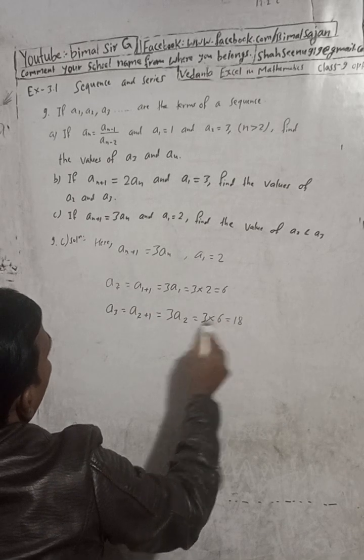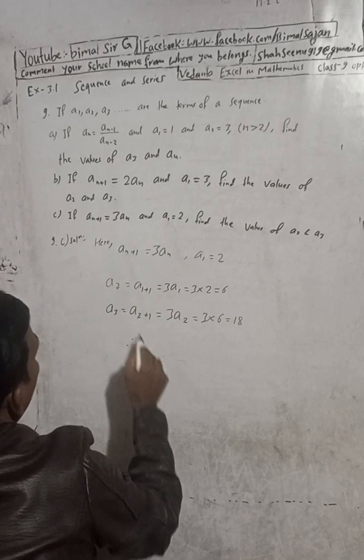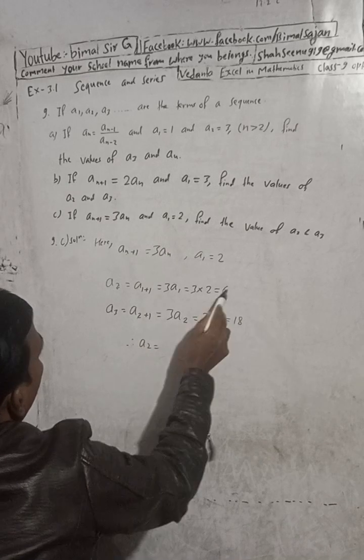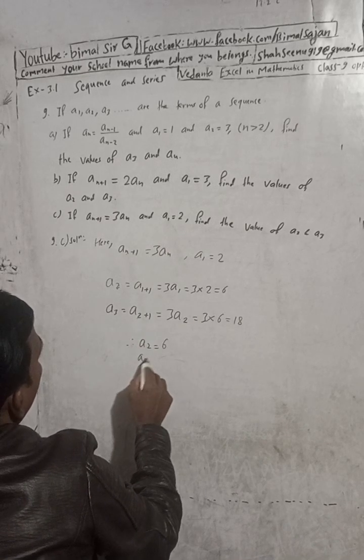Therefore our answer for part C is: a2 is equal to 6 and a3 is equal to 18.